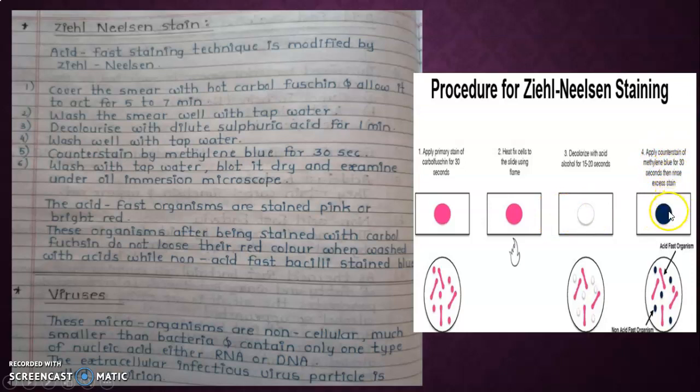Wash well with water, counter stain with methylene blue for 30 seconds, wash with tap water, blot it dry, and examine under oil immersion microscope. Apply primary stain carbol fuchsin for 30 seconds. The slide is heat fixed using flame. Apply counter stain of methylene blue for 30 seconds, then rinse excess stain. The acid-fast organisms appear as straight pink or bright red. These organisms, after being stained with carbol fuchsin, do not lose their red color when washed with acid, while non-acid-fast bacilli stain blue in color.